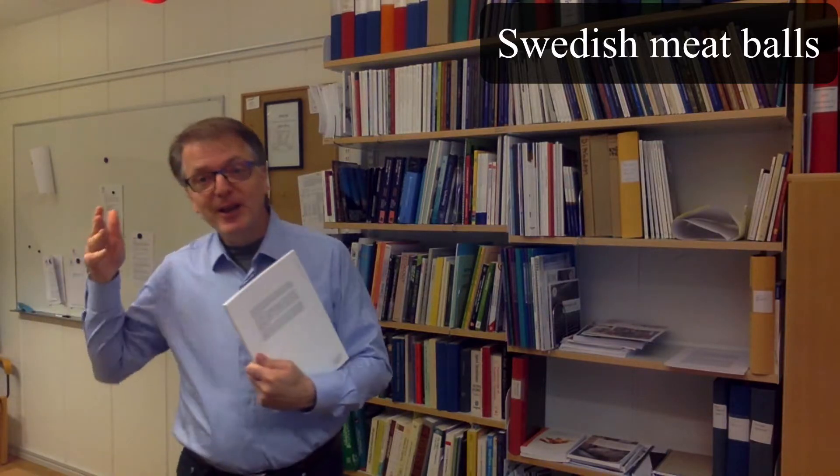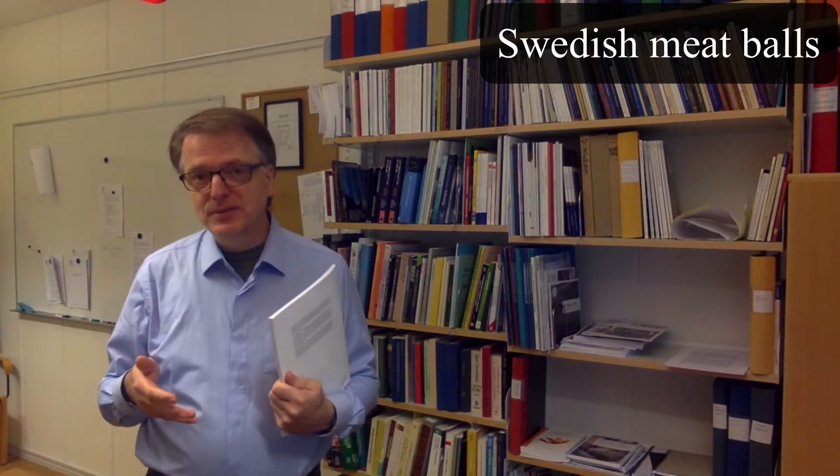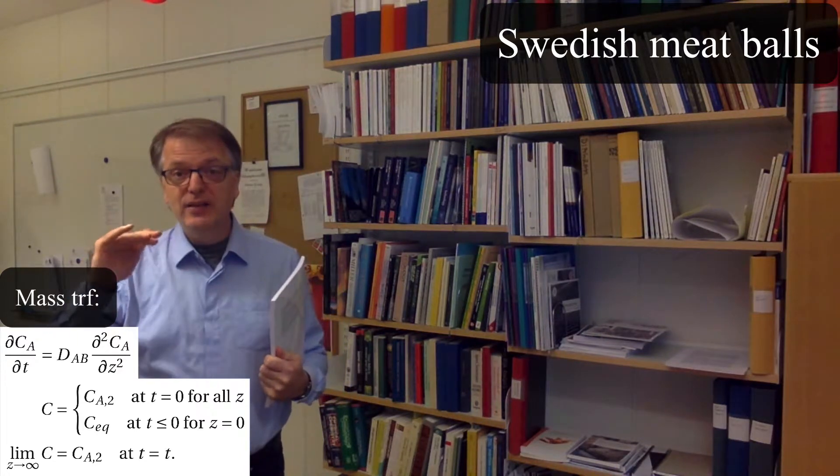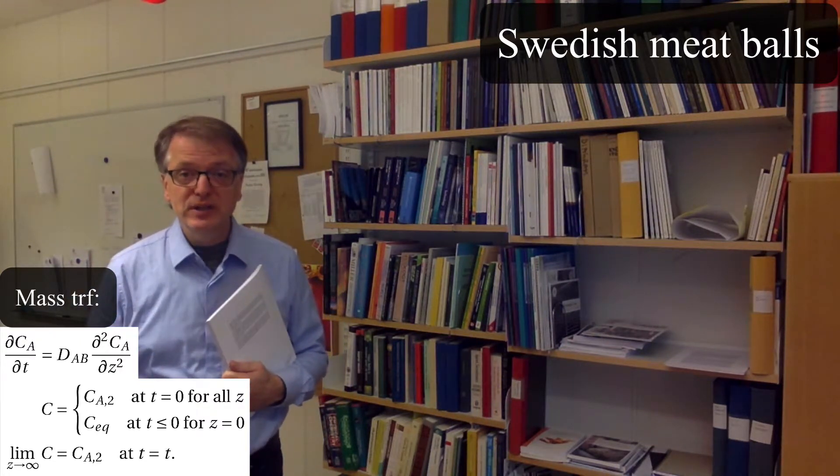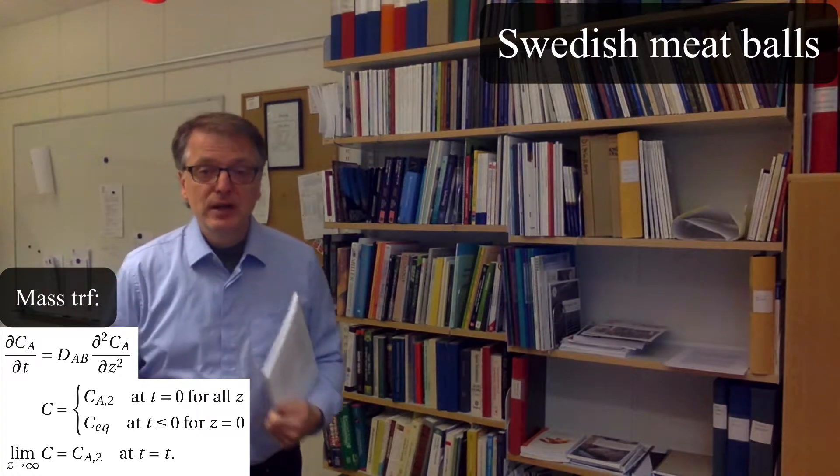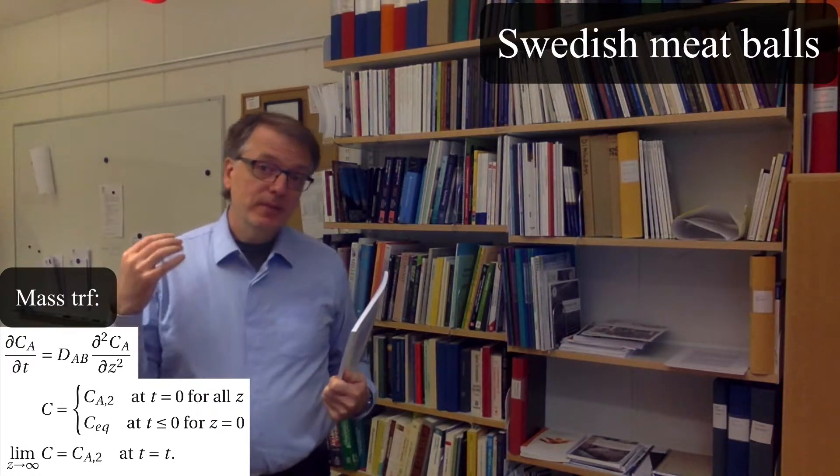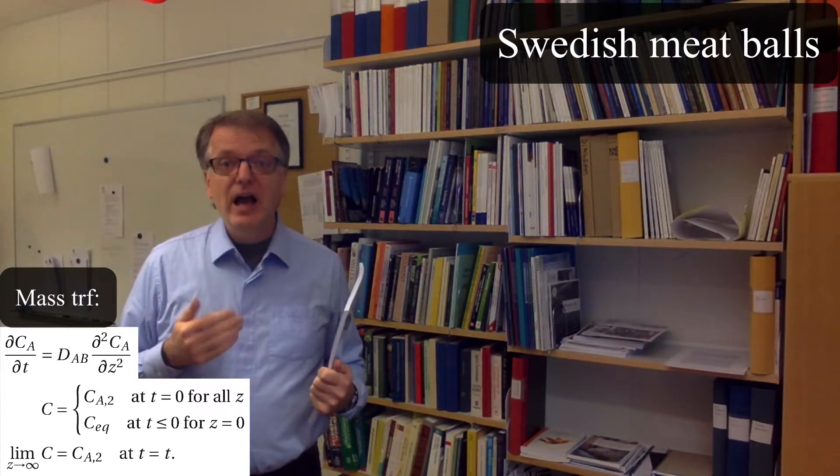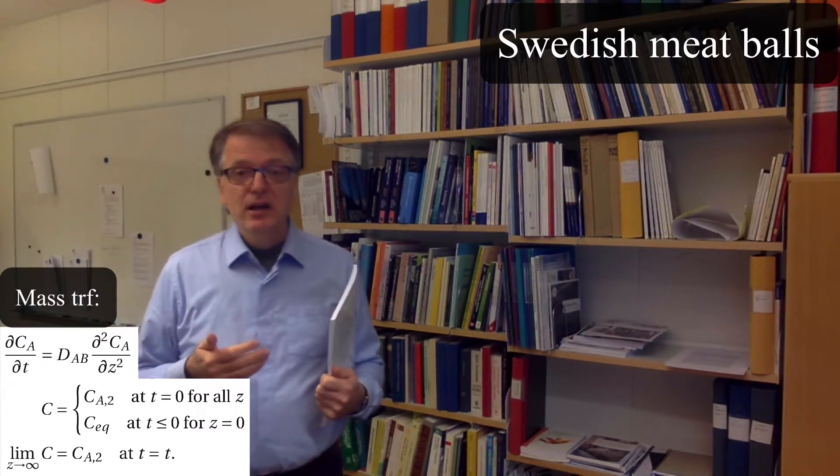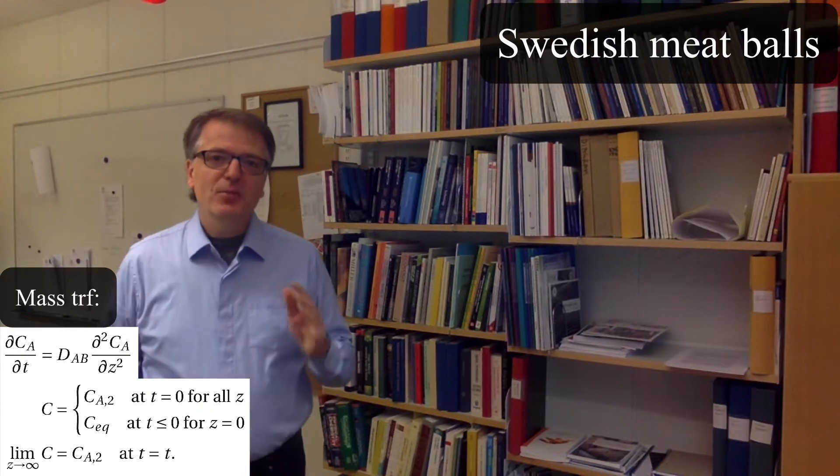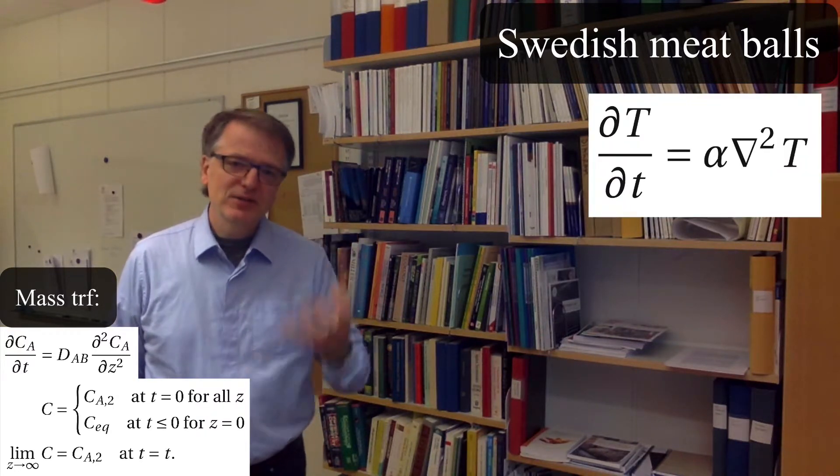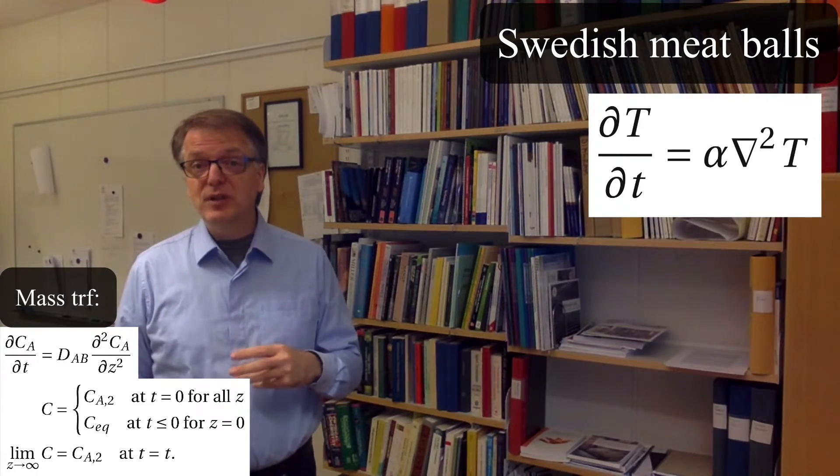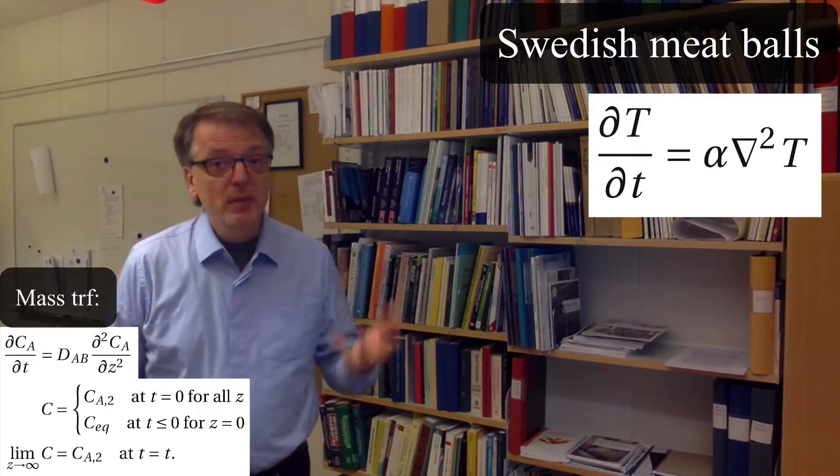Well, in the case we looked at now with mass transfer, we had a concentration at the border. So that's one kind of boundary conditions, but there are others. And another kind of boundary conditions is that you know the rate at the boundary. And the nice thing with these kind of problems is that we can use diffusivities for mass transfer, we can use diffusivities for heat transfer, and we can use diffusivities for transport of momentum.